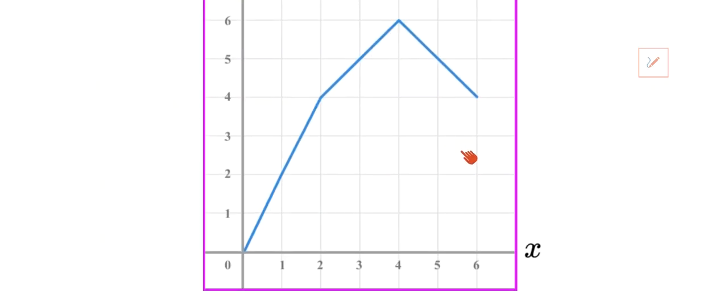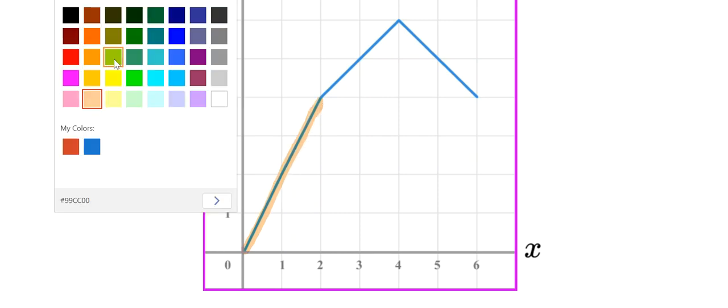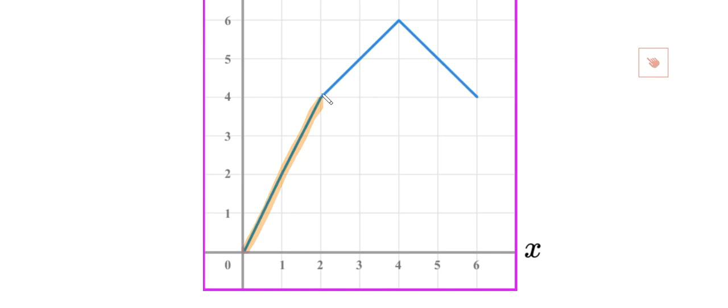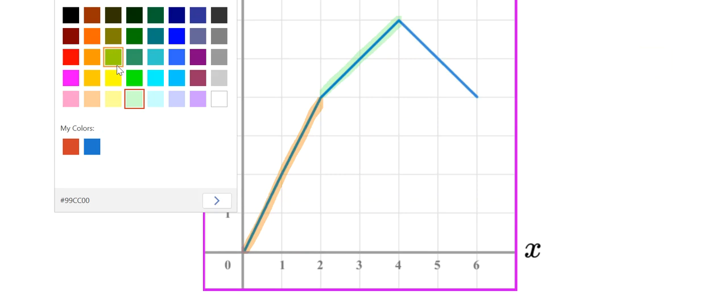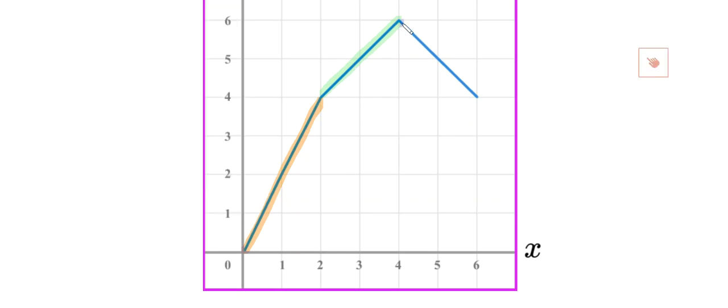So, looking at a question like this, we know we have three sections. This section is one rate of change. This section is a different rate of change. And this section is a third rate of change. What we do know is this one is positive, this one is, and this one is negative.